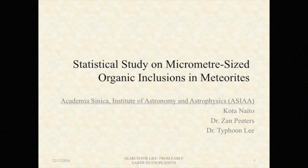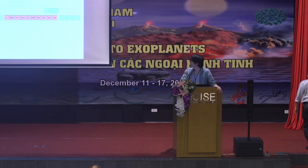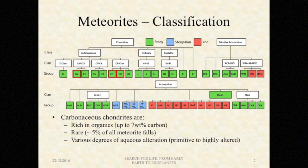Starting with a brief introduction of meteorites. As you can see in the diagram, meteorites fall into many categories. Today I am presenting specifically these three groups in carbonaceous chondrites. Some of the characteristics of carbonaceous chondrites include being rich in organics, containing up to about seven weight percent of carbon. They are rare, accounting for about five percent of all meteorite falls, and they see various degrees of aqueous alteration.